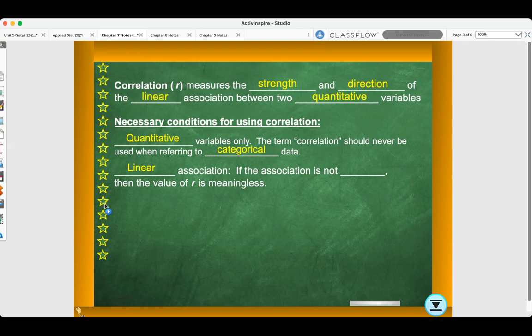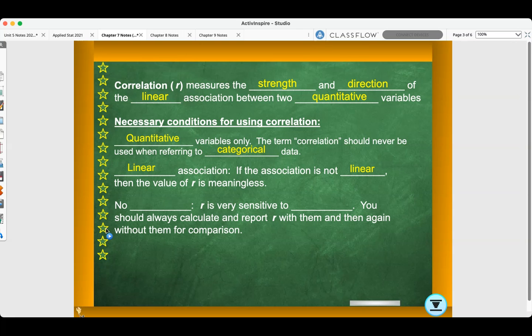Linear association. If the association is not linear, then the value of R is meaningless. And no outliers. R is very sensitive to outliers. You should always calculate and report R with them, and then again without them for comparison.